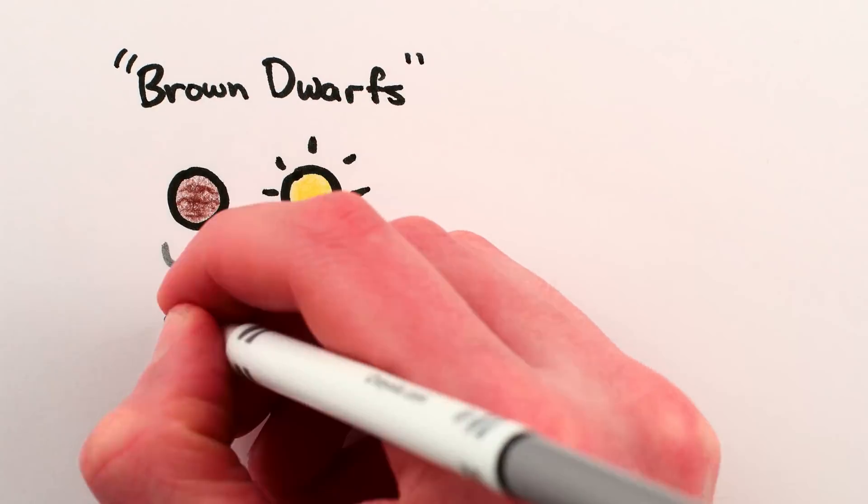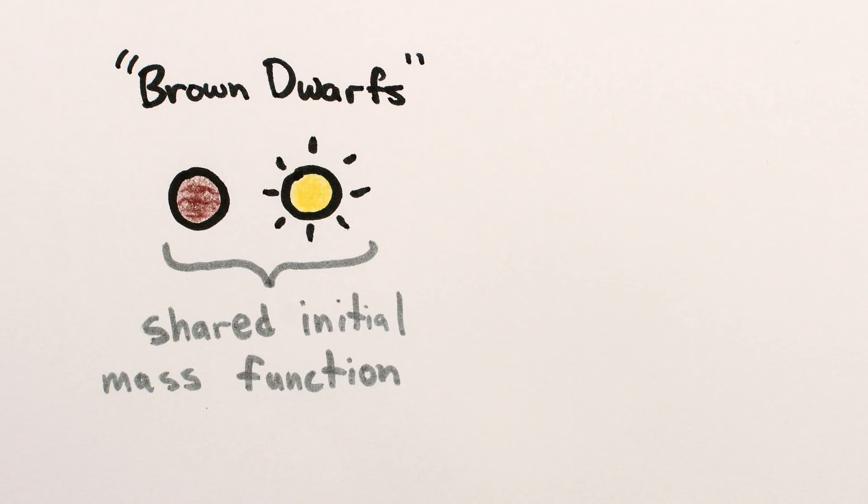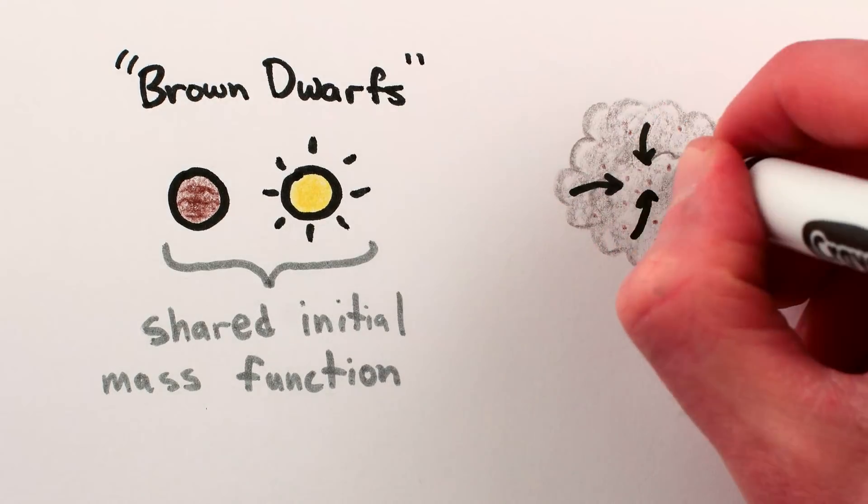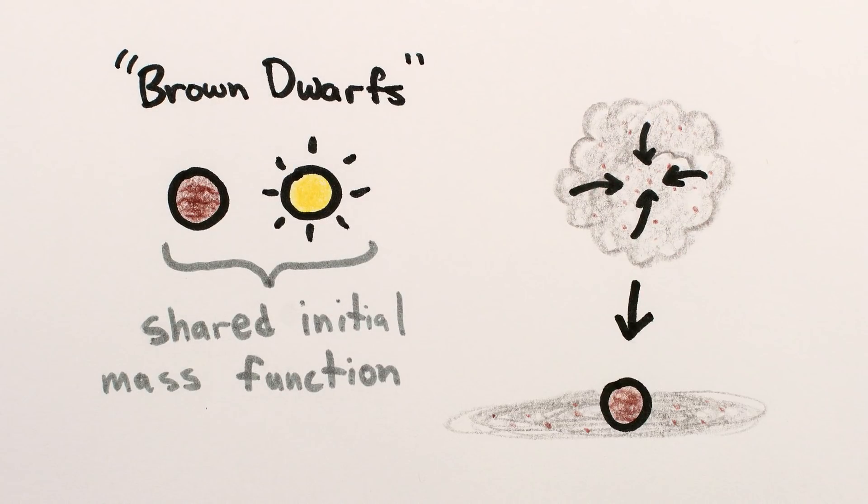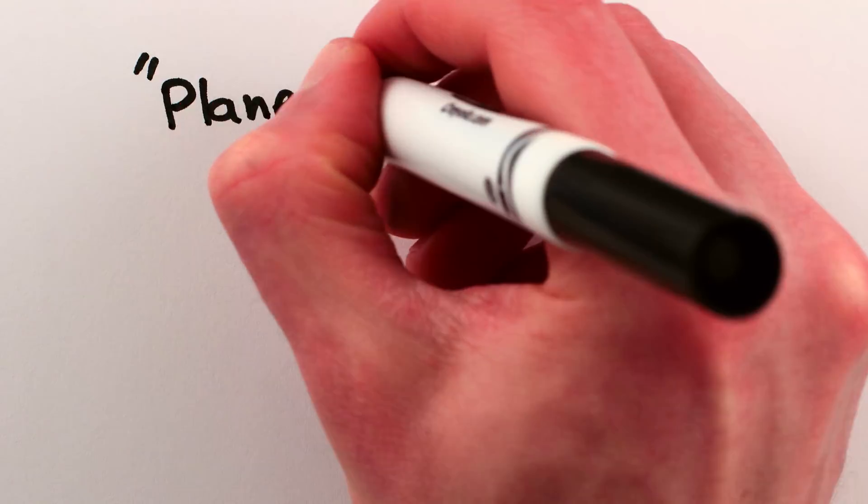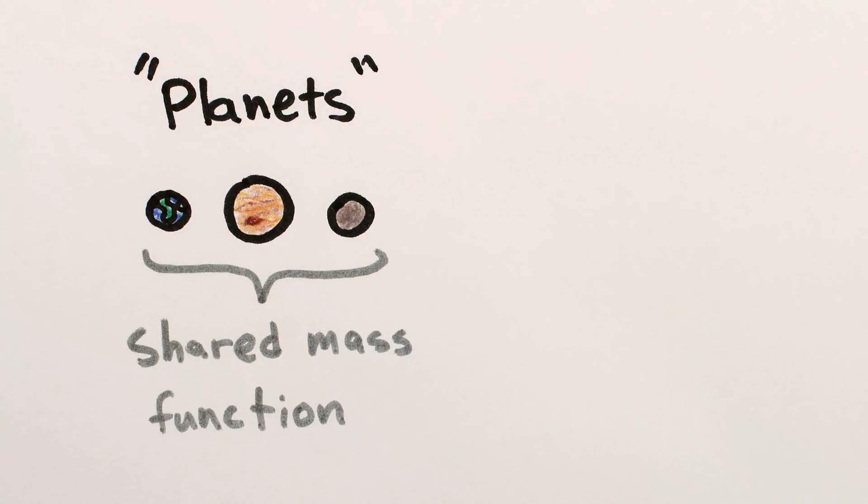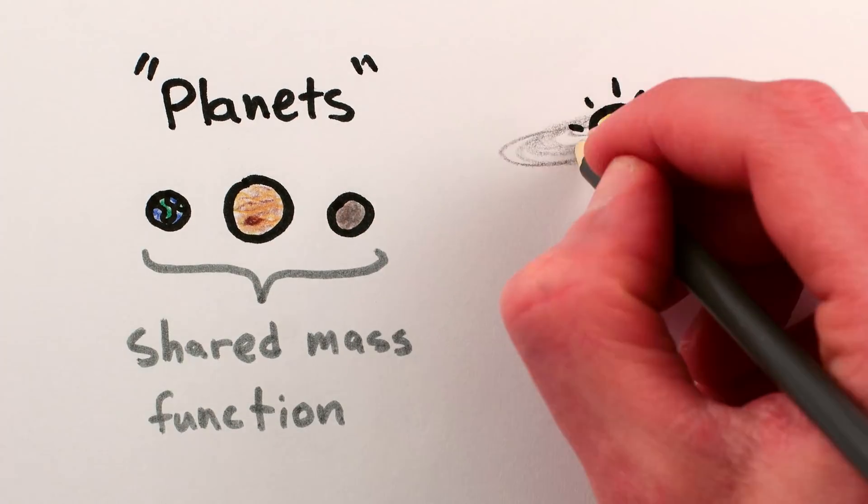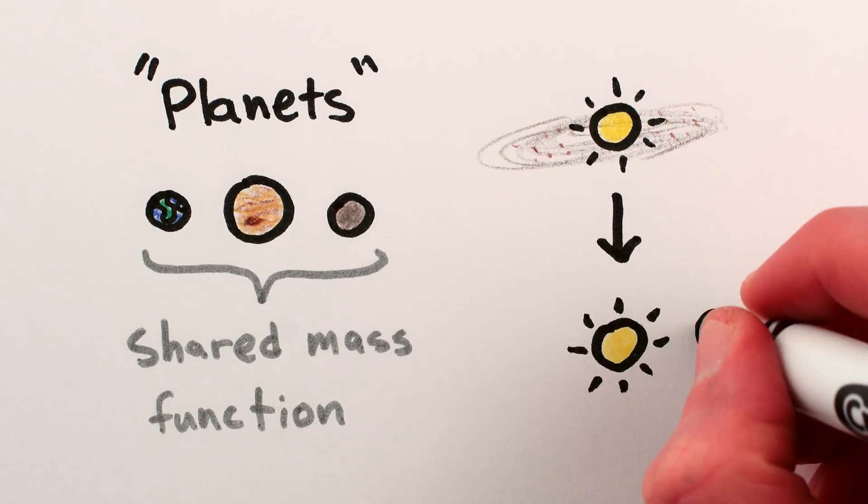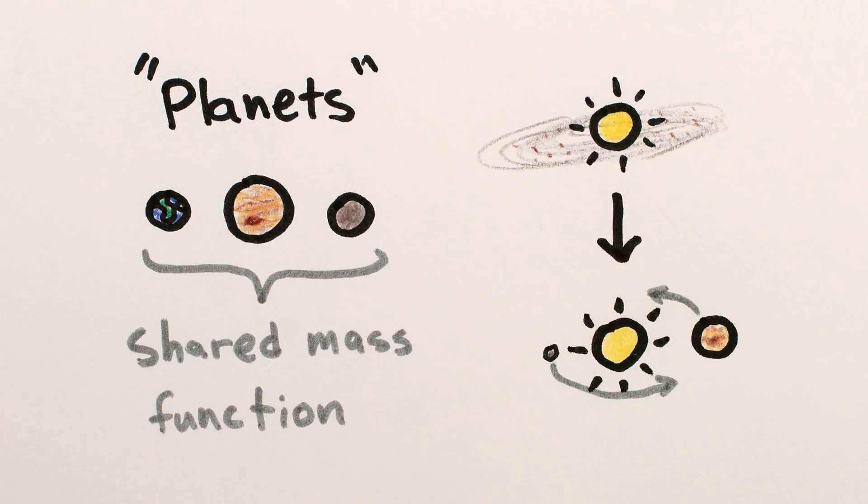2. Formation. Brown dwarfs and stars appear to follow the same distribution of masses, suggesting they form the same way, the gravitational collapse of a cloud of gas and dust. Planets appear to follow a different distribution of masses, suggesting they form in their own way, by accreting from the protoplanetary disk of gas and dust left over around a star, or brown dwarf, after it forms.